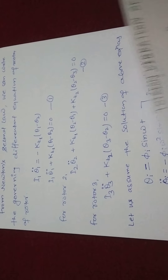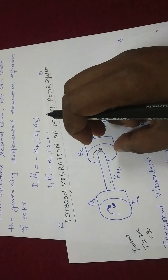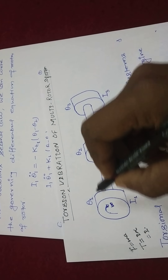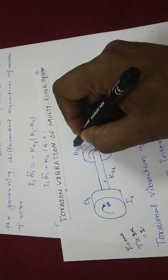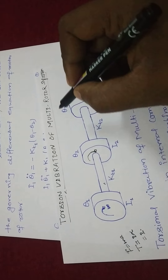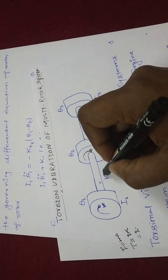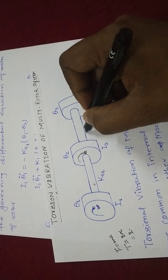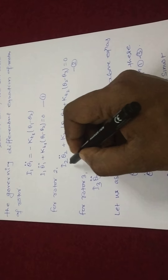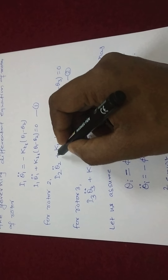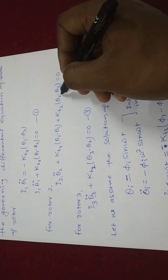For shaft 2 and rotor 2, theta 2 is influenced by both theta 1 and theta 3, dominated by torsional stiffness KT1 and KT2 of shaft 1 and shaft 2 respectively. The governing equation for rotor 2 is: I2 theta 2 double dot plus KT1 (theta 2 minus theta 1) plus KT2 (theta 2 minus theta 3) equals 0.